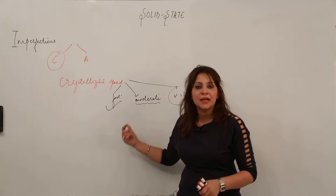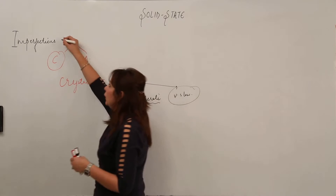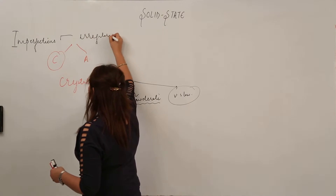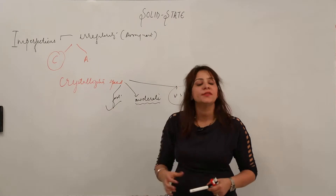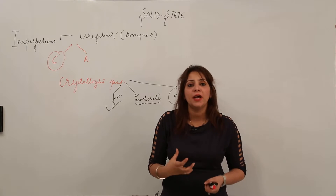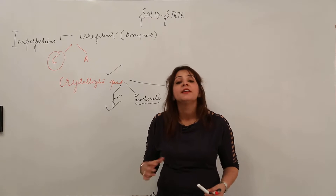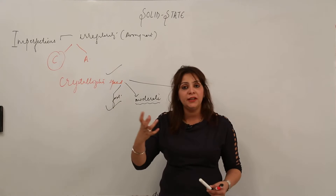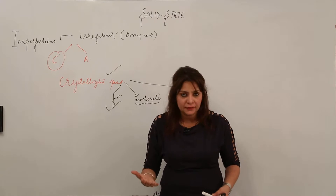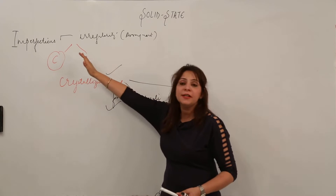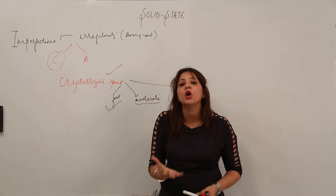So imperfection is simply an irregularity — an irregularity in the arrangement you observe. The cause behind that irregularity is the crystallization speed: the particles don't get enough time to arrange themselves in a proper manner. That is why we get to see imperfections, or irregularities, in these crystals — in the solids which we get to see.